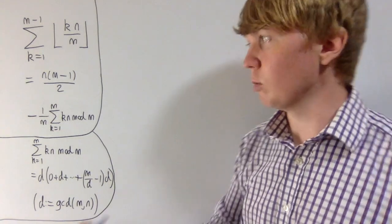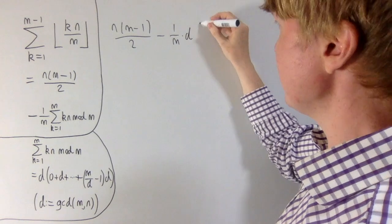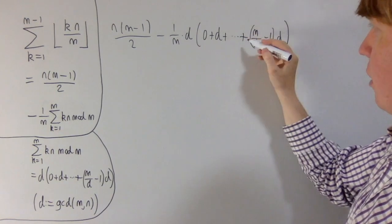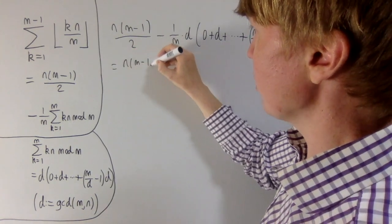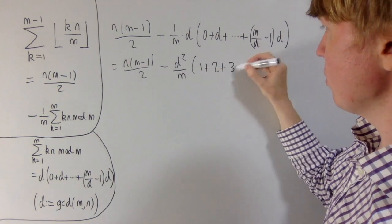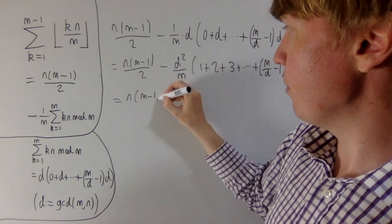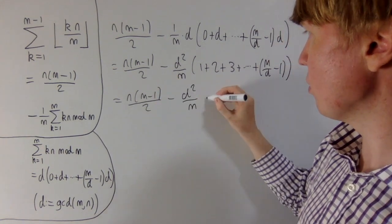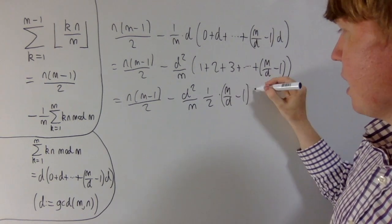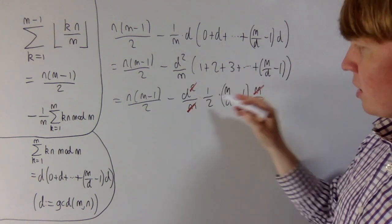Now we're ready to tidy up all of this and actually evaluate the sum. So we've got n into m minus 1 over 2 from earlier, then we're taking away 1 over m multiplied by d, then we've got this arithmetic progression going up to m over d minus 1 times d. So we'll take out a factor of d here, which gives us n, m minus 1 over 2, then minus d squared over m, then all we're summing is just 1 plus 2 plus 3 and so on up to m over d minus 1. So we can evaluate this really easily. We get n, m minus 1 over 2, then using our sum of integers up to m over d minus 1, we get a half times m over d minus 1 times m over d. We're going to get quite a bit of cancellation. This m cancels with this m, our d cancels with one of the d's here.